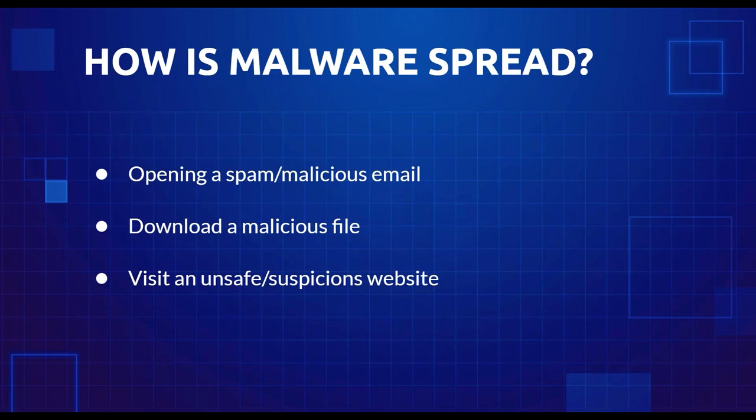Malware is typically spread through phishing emails, mostly hidden as attachments — sometimes disguised as safe attachments from trusted contacts who were themselves attacked by malware. These can be tricky because they look like an email a family member or friend is sending you. Sometimes they're easily identifiable as suspicious. Malware can also spread by visiting unsafe or suspicious websites as well.